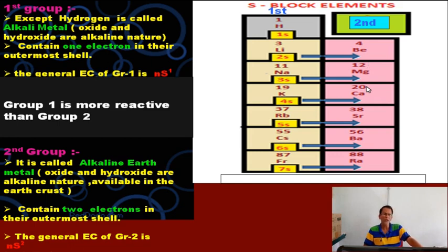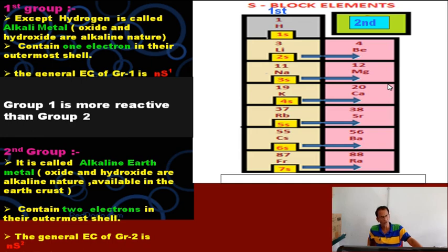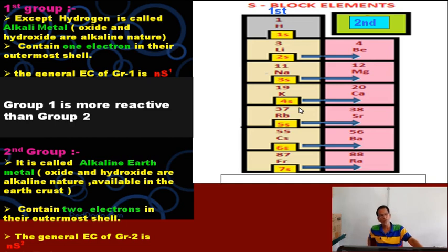The second group is called alkaline earth metals because their oxides and hydroxides are alkaline in nature and are available in the earth's crust. They have two electrons in their outermost shell. The members are beryllium, magnesium, calcium, strontium, barium, and radium. Their general electronic configuration is nS². Alkali metals are more reactive than alkaline earth metals.